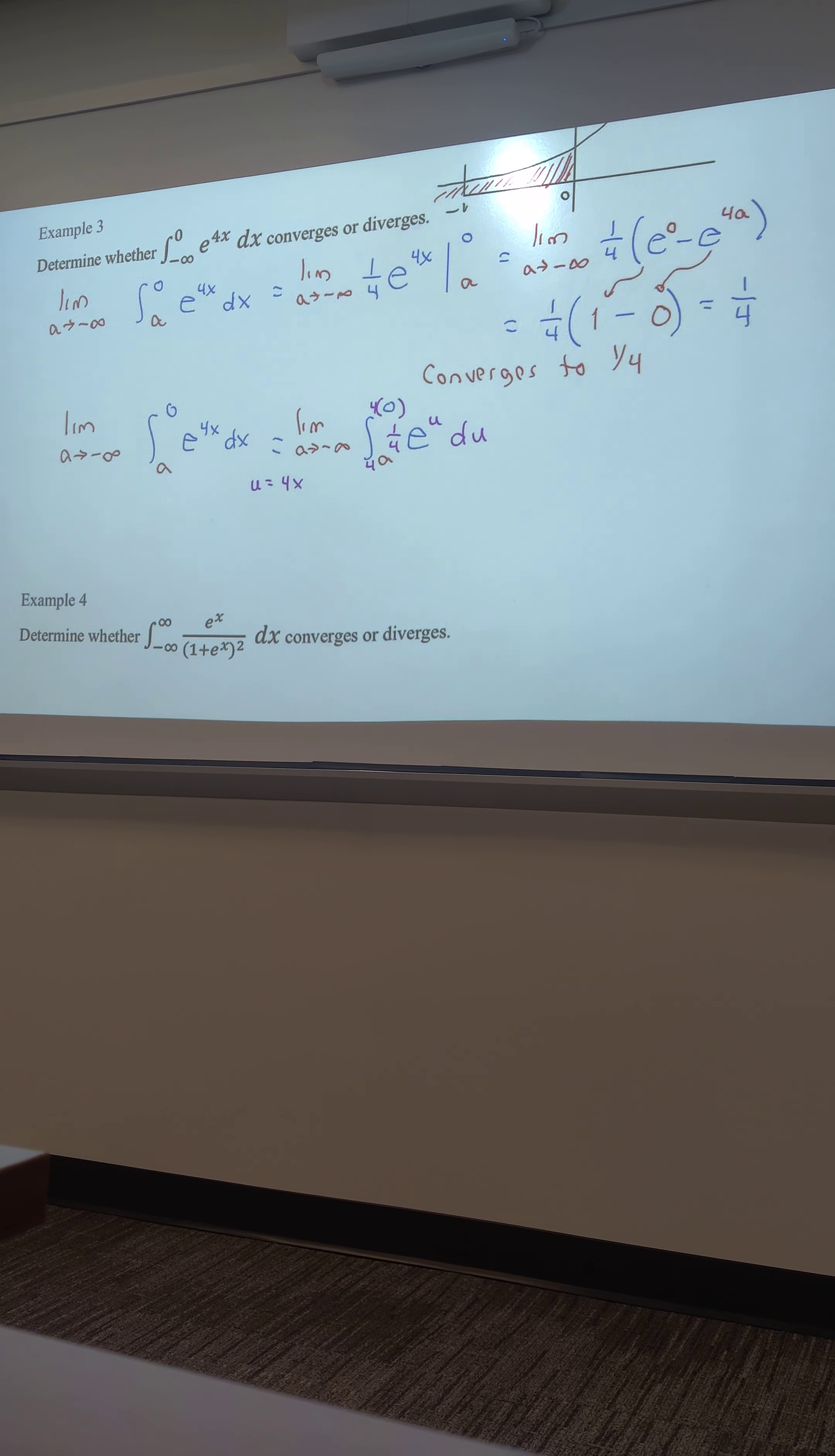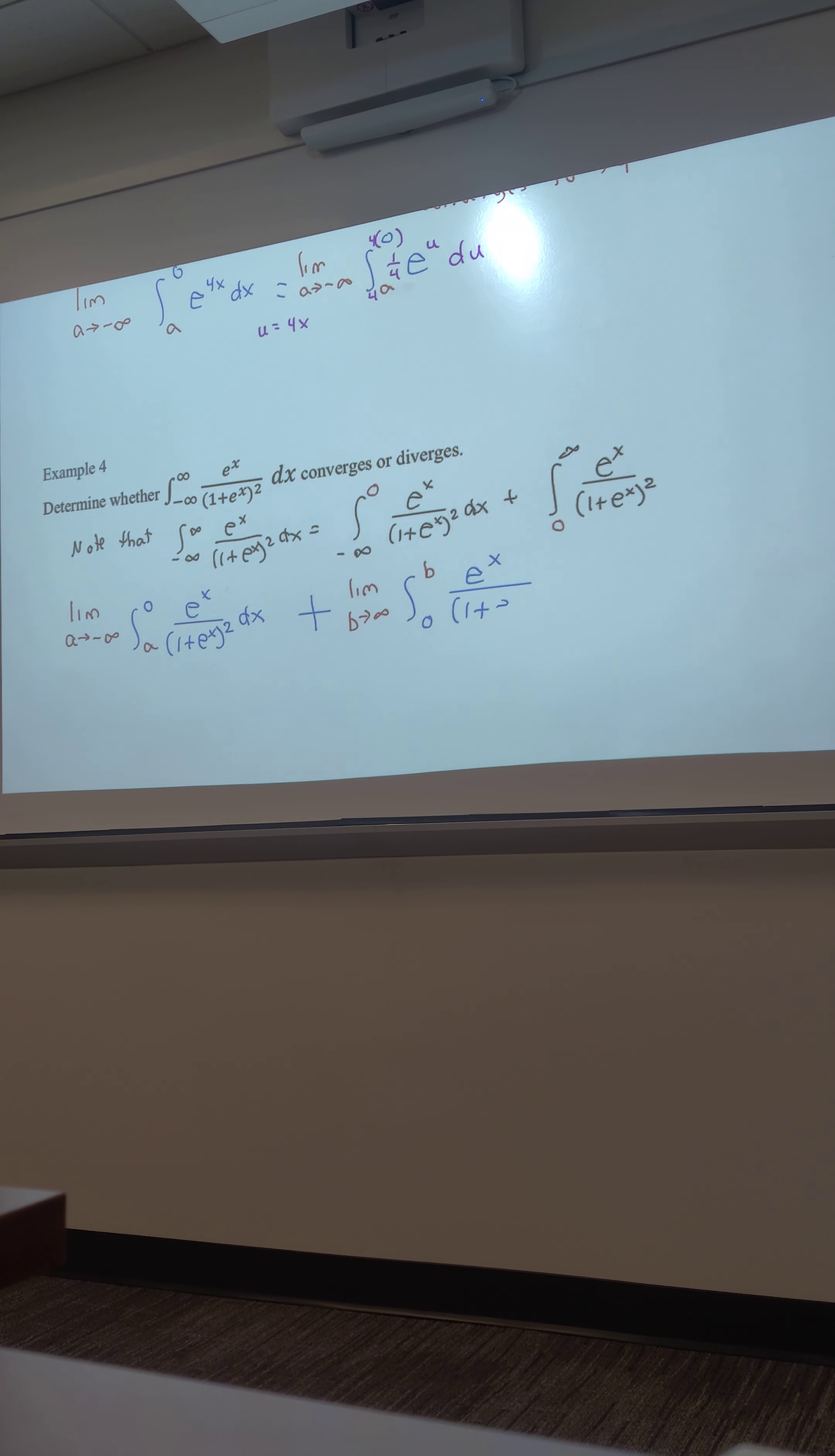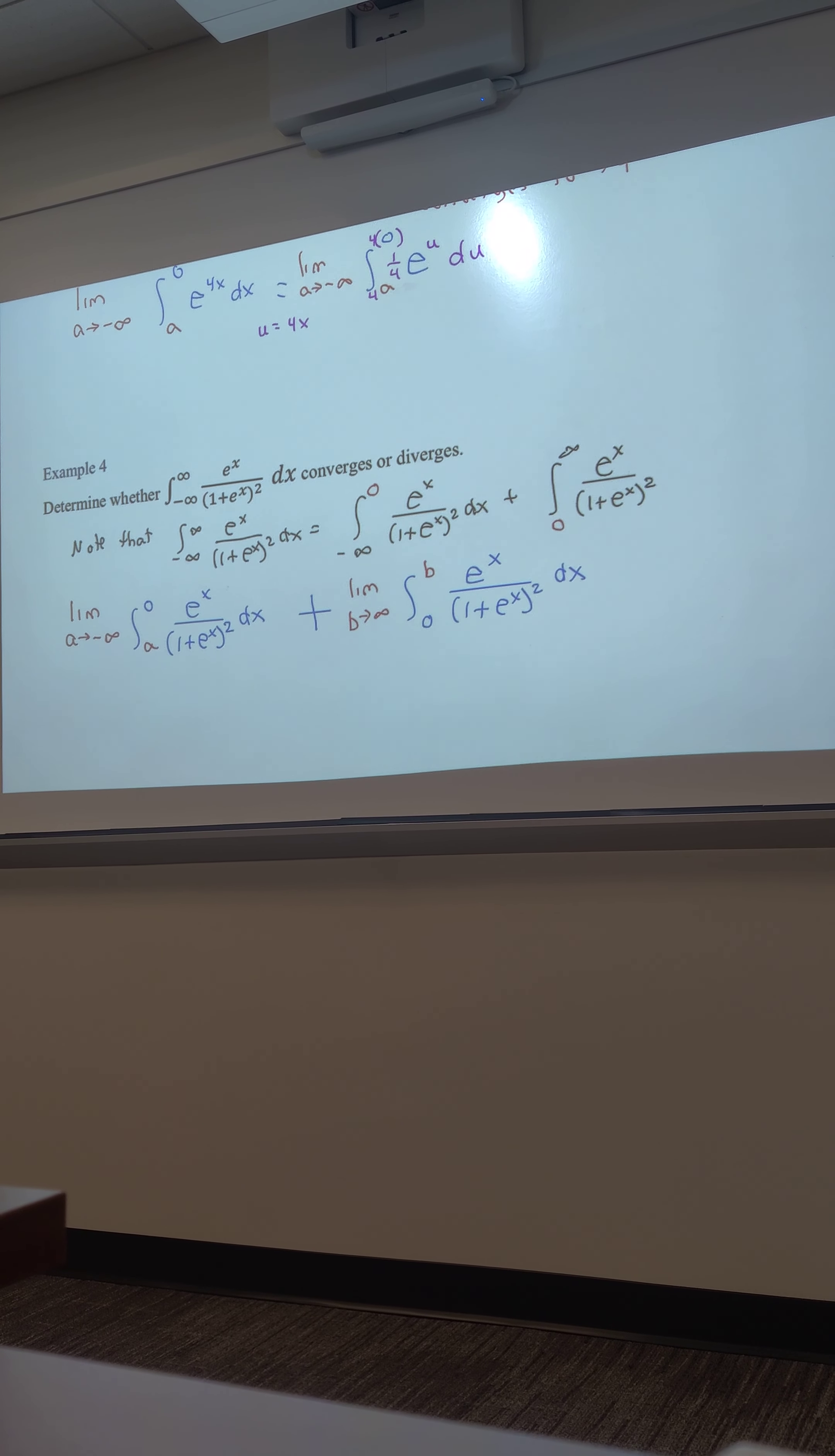For the first one, I can take the limit as a goes to negative infinity, the integral from a to 0. E to the x, 1 plus e to the x squared. Plus, then I can take the limit as b goes to infinity, the integral from 0 to b of e to the x divided by 1 plus e to the x squared. Fair enough.